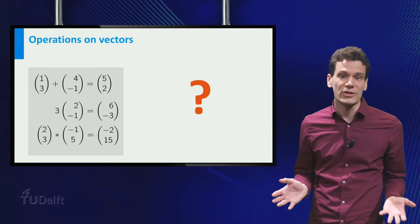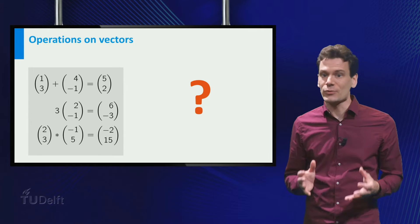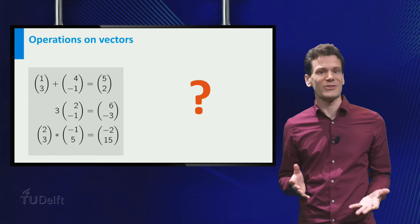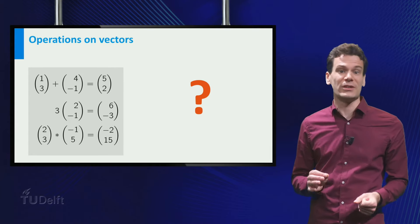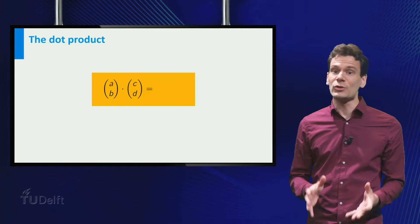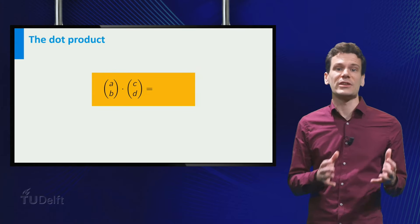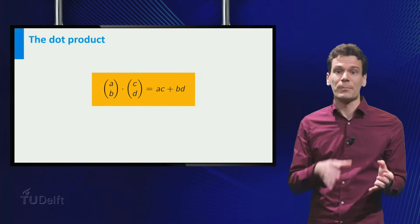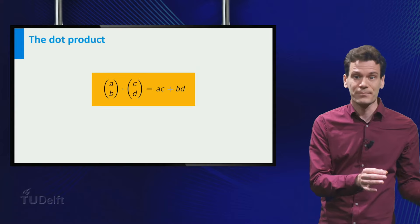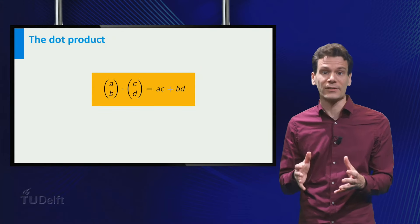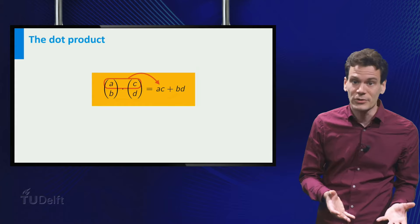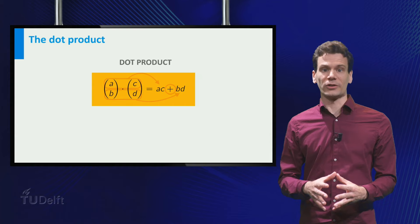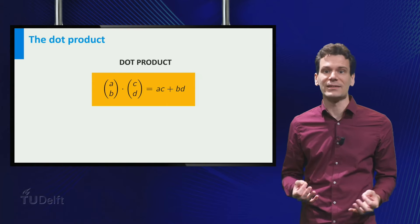So, the question is, can we find a product of vectors that is related to geometric properties of these vectors? And the answer is yes. Let me first just give you the definition. Take two vectors (a,b) and (c,d). Then we define the product to be a times c plus b times d. So we multiply the first components of both vectors, multiply the second components, and then add these numbers.